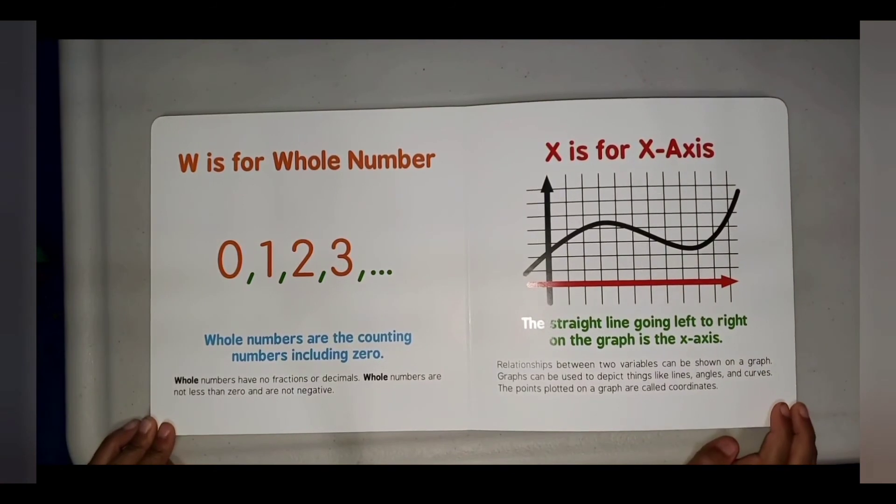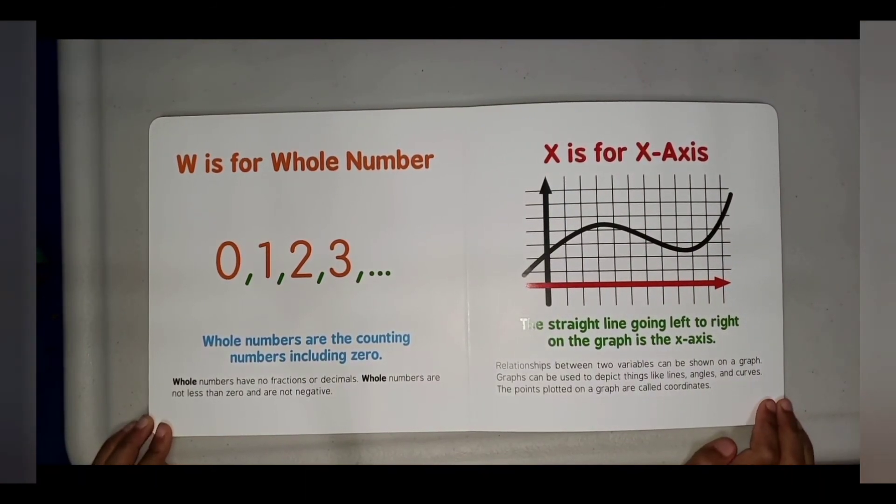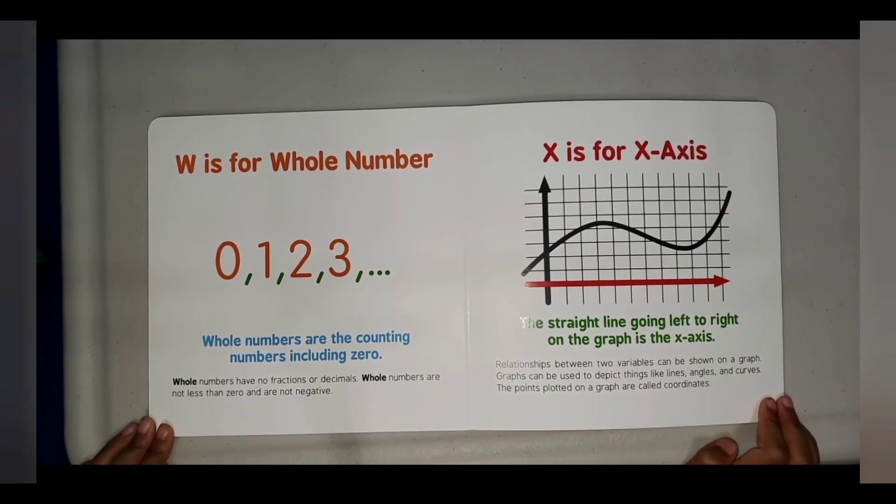W is for Whole Number. Whole numbers are the counting numbers including zero. Whole numbers have no fractions or decimals. The whole numbers are not less than zero and are not negative.